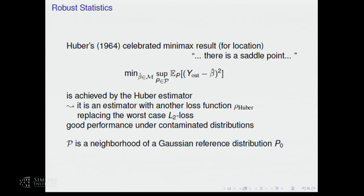This is Huber's celebrated minimax result. You can look at robust statistics from a worst-case risk optimization point of view. You have an L2 risk, look at worst-case risk, and find the best estimator — in a certain class, this is the Huber estimator with a different loss function. The class is typically a neighborhood of a Gaussian reference distribution P0. A main difference is that this is particularly geared for good performance under a contaminated training sample distribution, and possibly also the test sample.